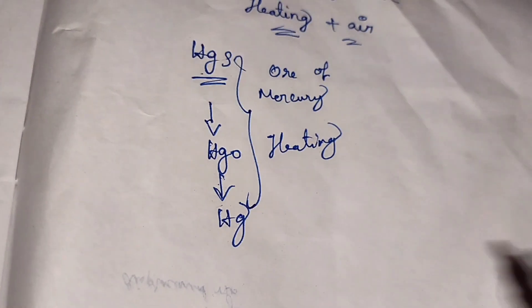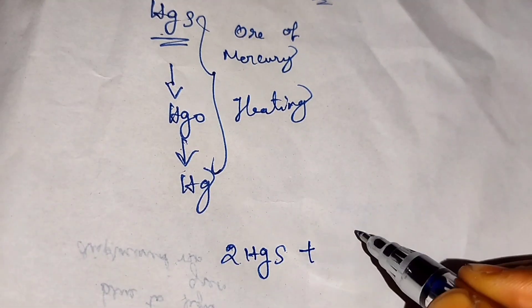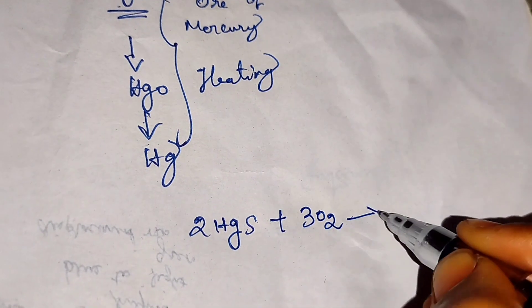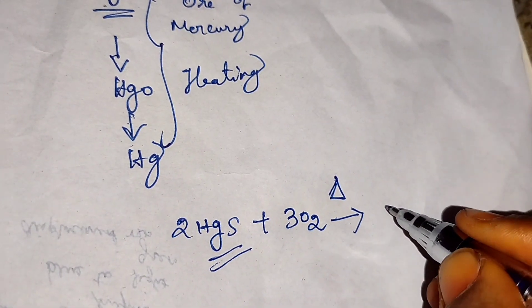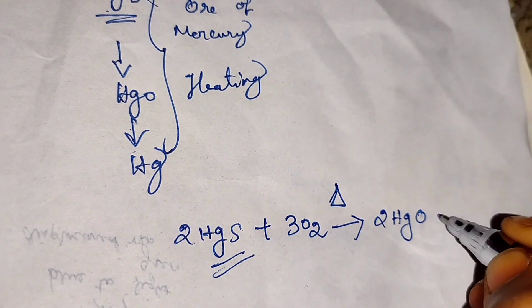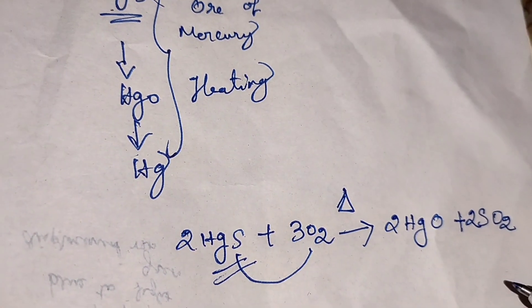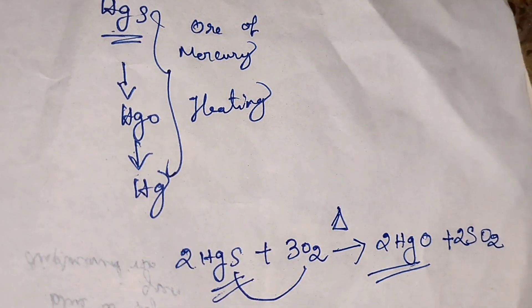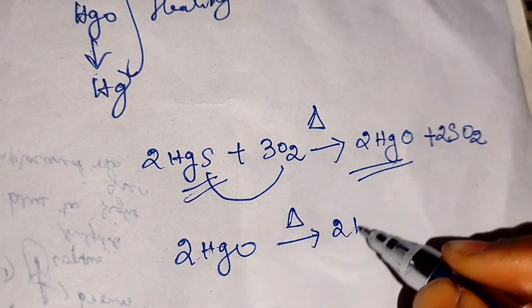Now I will write the equations for this reaction. I am taking mercury sulfide in sulfide form and heating it in the presence of air - specifically oxygen present in air. When heated, mercury sulfide is converted into mercury oxide HgO, and SO2 is also formed. Then again I heat this mercuric oxide, 2HgO, and it is reduced to mercury with oxygen separated.